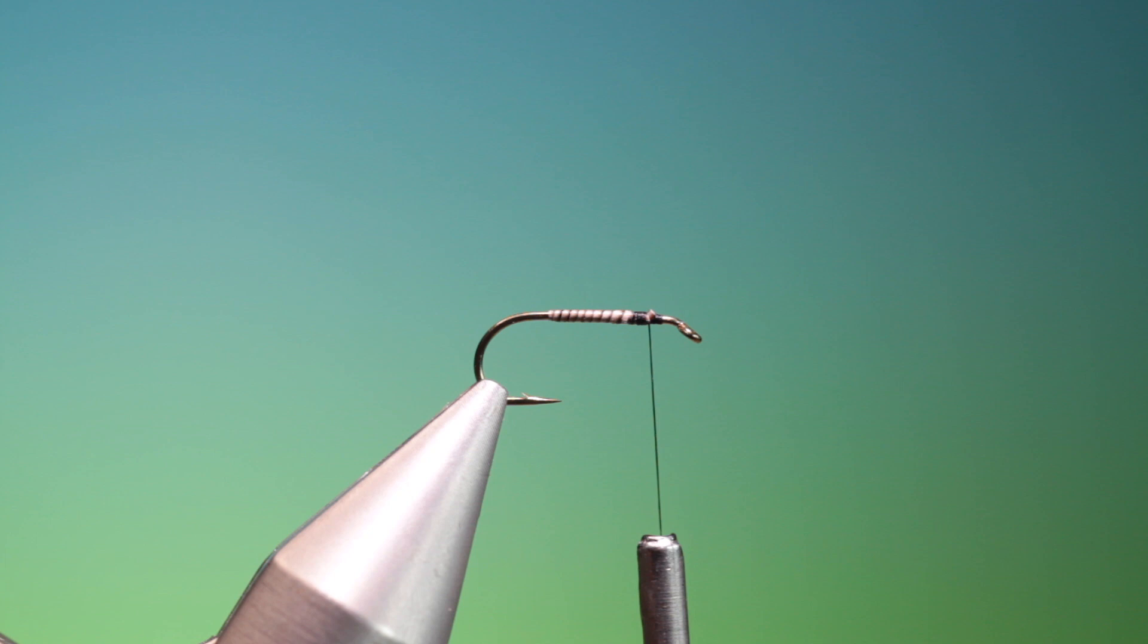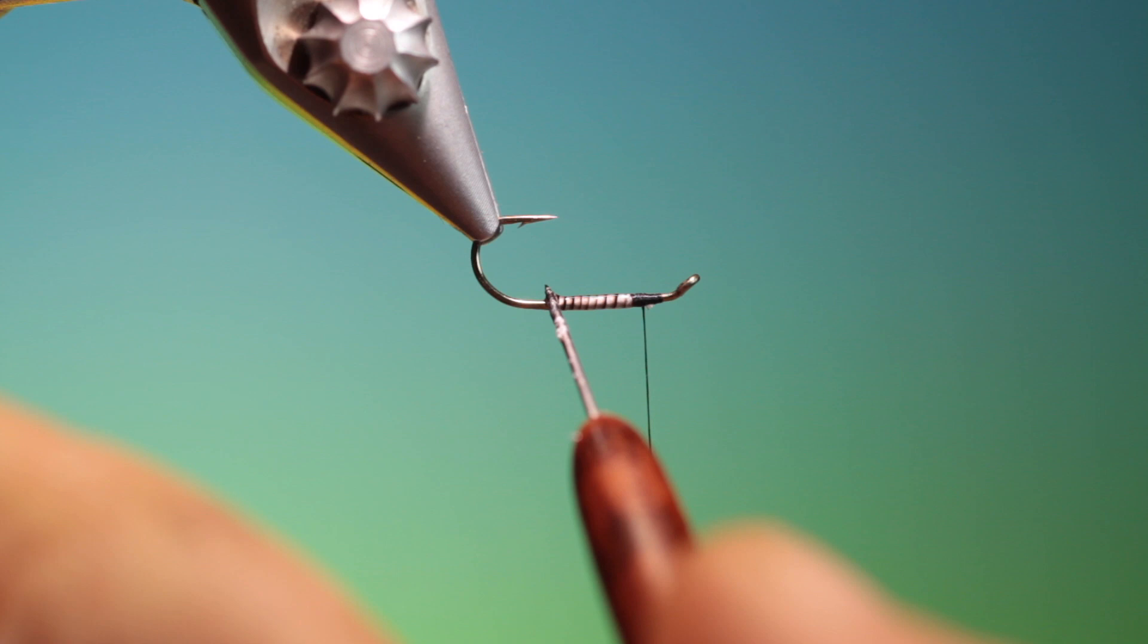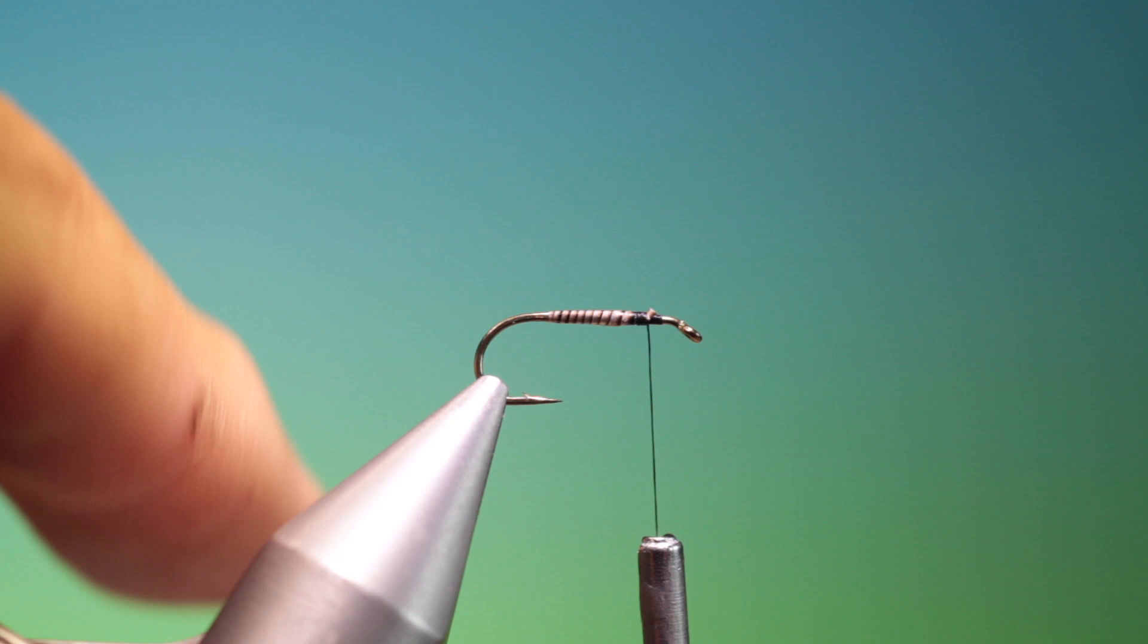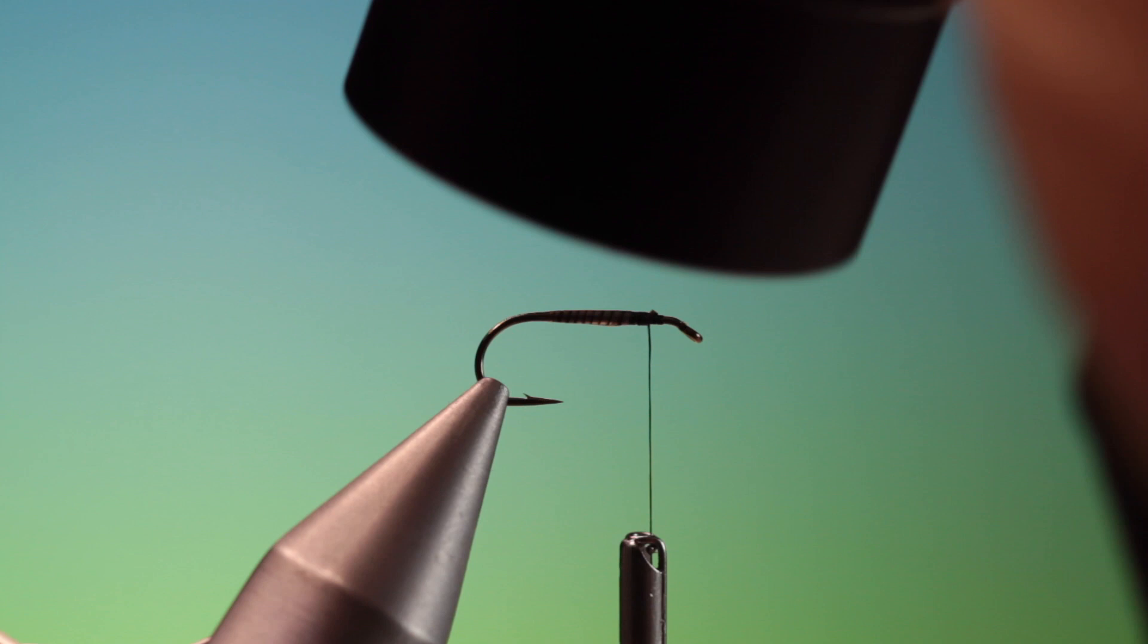Now what we need is just a tiny drop of UV resin. Make sure that you take it a little bit further back than the quill, just so it goes onto the hook shank and make it a little stronger. Just like that. I'll just give that a blast. That'll do us.